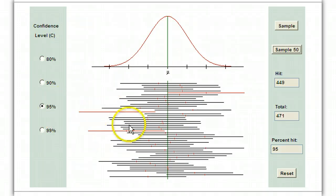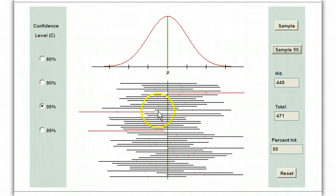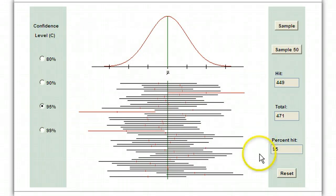That's the idea of a confidence interval. We're trying to guess what the population mean is; we don't know at all what it is. We use the sample mean to be our best guess, but we always go above and below to make an interval to improve on that guess. 95% of the time, we hit it.